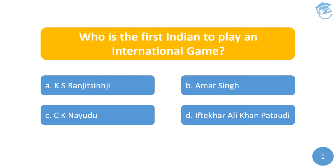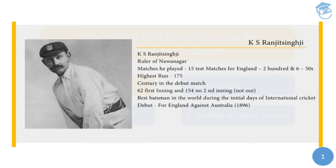The answer is Kumar Shri Ranjitsinhji. Ranjitsinhji, after whom the Ranji Trophy is named, was the ruler of Nawanagar. He played 15 test matches for England, scoring 2 hundreds and 6 fifties, with a highest score of 175. He scored a century on debut — 62 in the first innings and 154 not out in the second — and was considered the best batsman in the world in the early days of international cricket. He debuted for England against Australia in 1896.